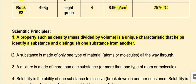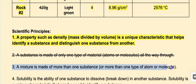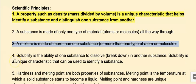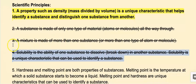A substance is made of only one type of material, atoms, or molecules all the way through — nope, it has nothing to do with what we're talking about, so I'm going to strike through it. A mixture is made of more than one substance or more than one type of atom or molecule — that doesn't do it for me, so I'm getting rid of that one too. Solubility — we haven't talked about solubility, and it doesn't have anything to do with what my data supports, so I'm striking through that one as well.